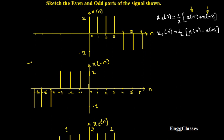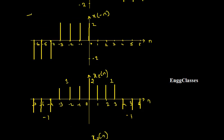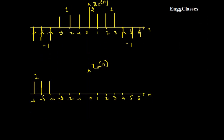At positions minus 3, minus 2, and minus 1, x(n) has nothing — 0 minus 2 gives minus 2, divided by 2 gives minus 1. So at positions minus 3, minus 2, and minus 1, the odd part has amplitude minus 1.